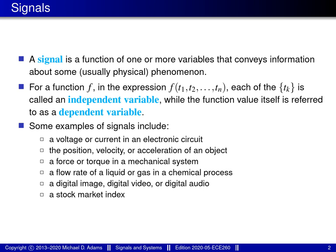I need to introduce a little bit of terminology that relates to functions. We can talk about independent and dependent variables. If I have a function f of variables t1, t2, and so on up to tn, we refer to t1, t2, and so on up to tn as the independent variables of the function, whereas the value of the function itself is referred to as the dependent variable. There are many, many examples of signals — the list goes on essentially forever.